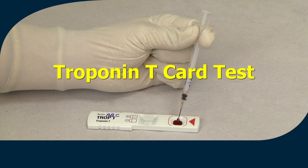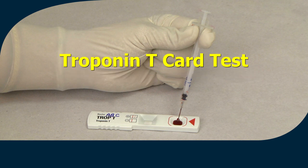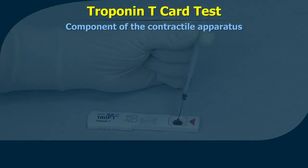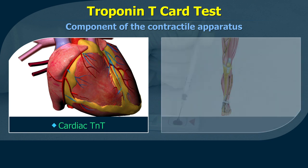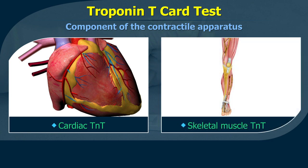Troponin T card test. Troponin T (TNT) is a component of the contractile apparatus of the striated musculature. There are two types of troponin T: cardiac troponin T, which originates exclusively from the myocardium, and skeletal muscle troponin T, originating from skeletal muscles.